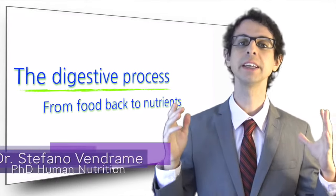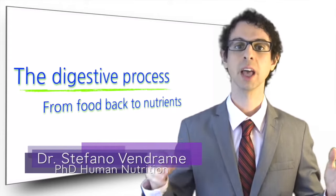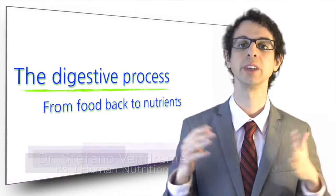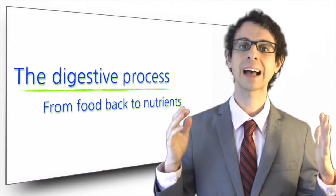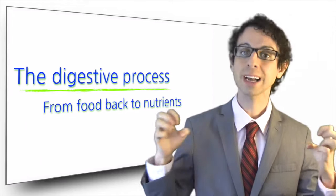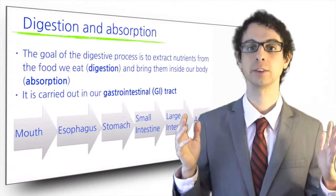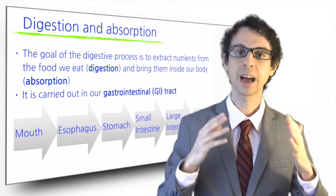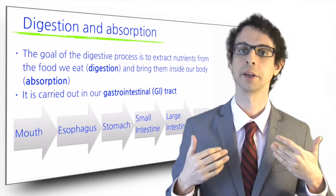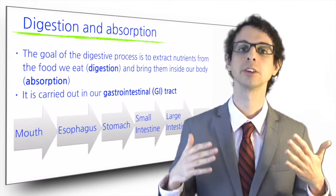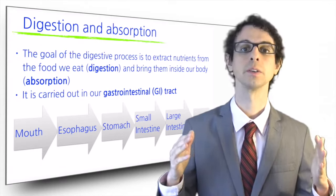We have seen so far how our body needs nutrients for energetic, structural, and regulatory functions, and how these nutrients are contained in the food we eat. To be able to use these nutrients, the first task that our body has to accomplish is extracting them from the food we eat. This is the goal of digestion. Once food has been broken down into its individual nutrients, these must go inside our body so they can enter the bloodstream and be delivered to the tissues and organs that need them. This process is called absorption.